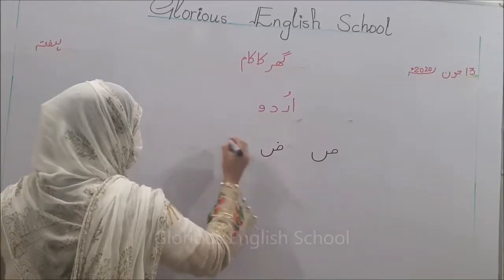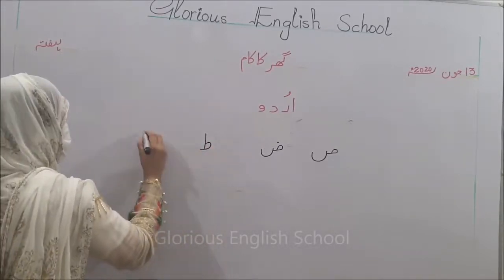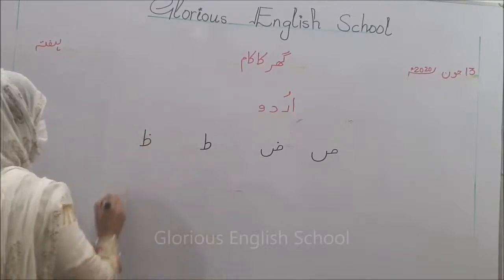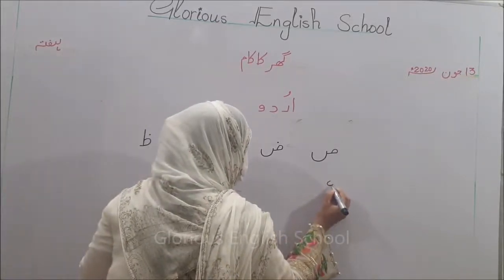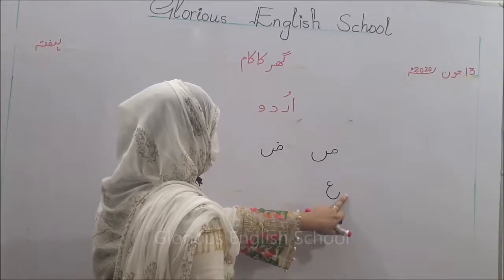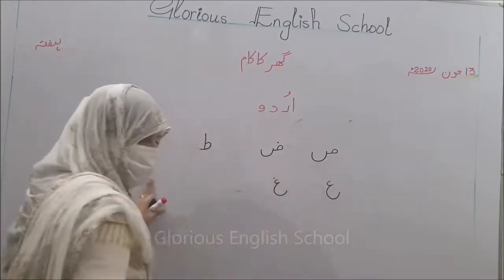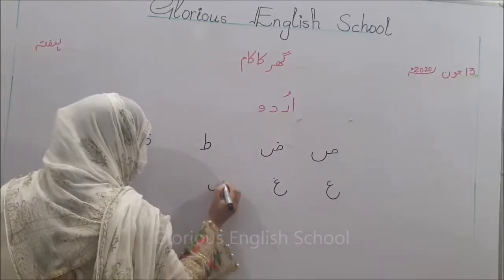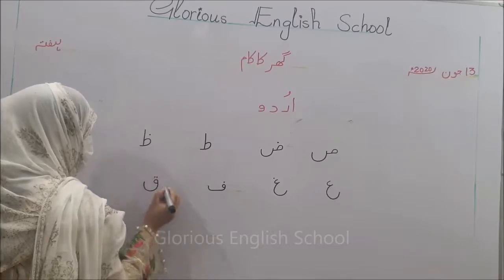Swad, Zwad। सीधी लाइन नीचे से गोल कर देंगे और यहाँ खत्म कर देंगे - Toin। Again line, here we will have a point - this is Swad। Aine - we will have a point, line। Aine, Rain। Fe। Kauf, kauf। Swad, Zwad, Toin, join Aine, Fe, Kauf।